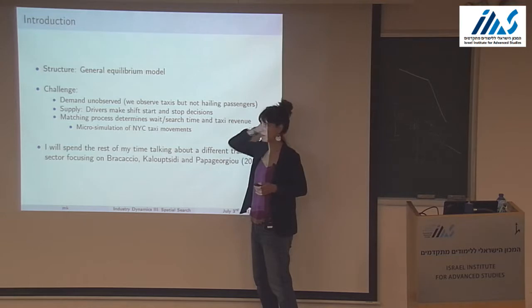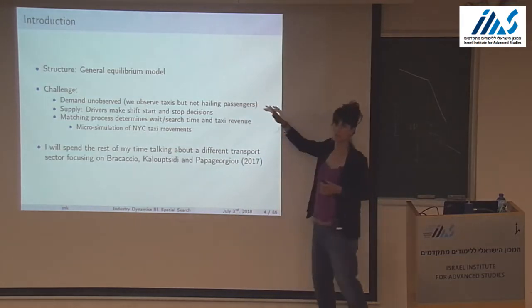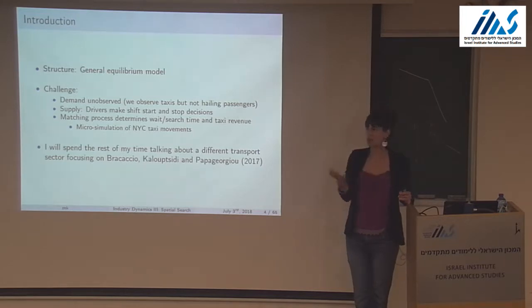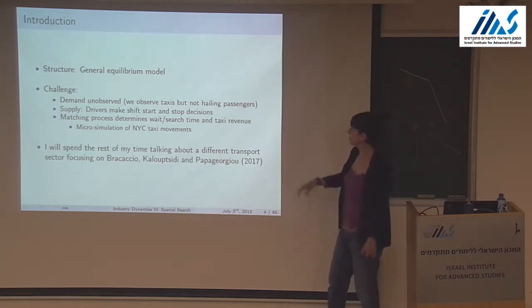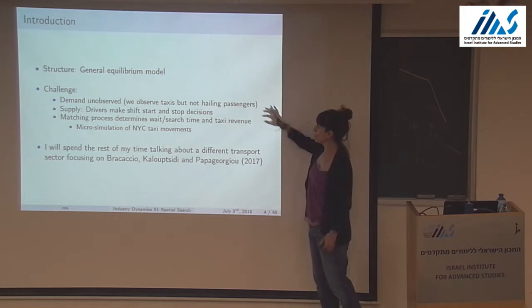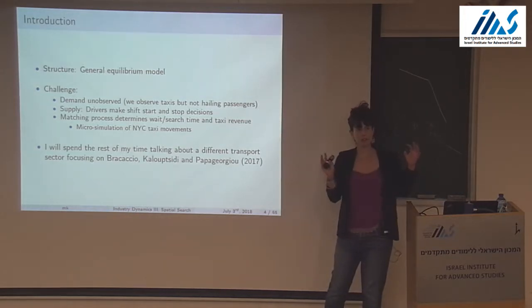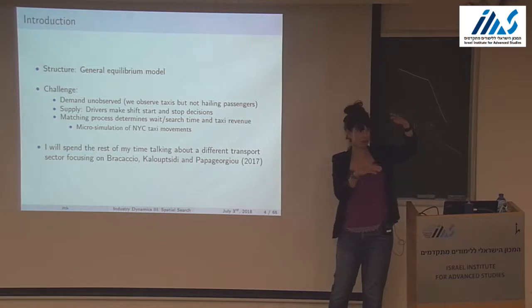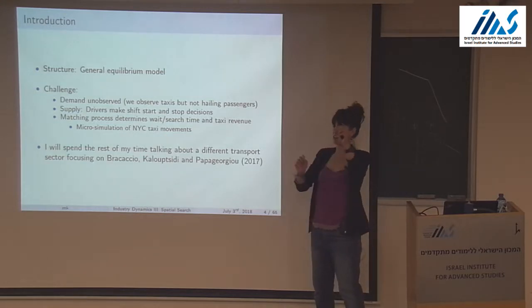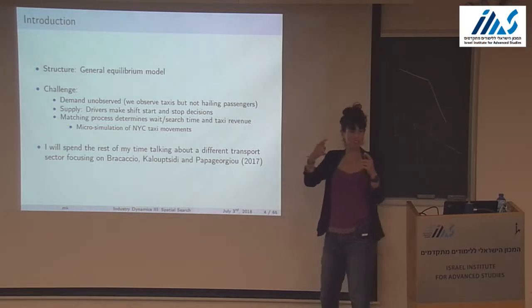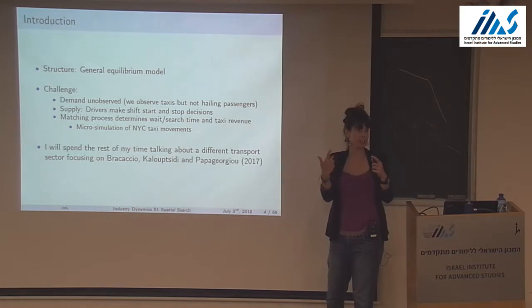To bypass the unobserved demand problem, they write a micro-simulation of New York City, taking seriously the structure of blocks — wider in the north, narrower in the south — with taxi drivers randomly turning at nodes and randomly meeting passengers. Through this micro model they essentially invert the matching process to figure out how many people must have been waiting at each intersection. That's how they estimate demand.